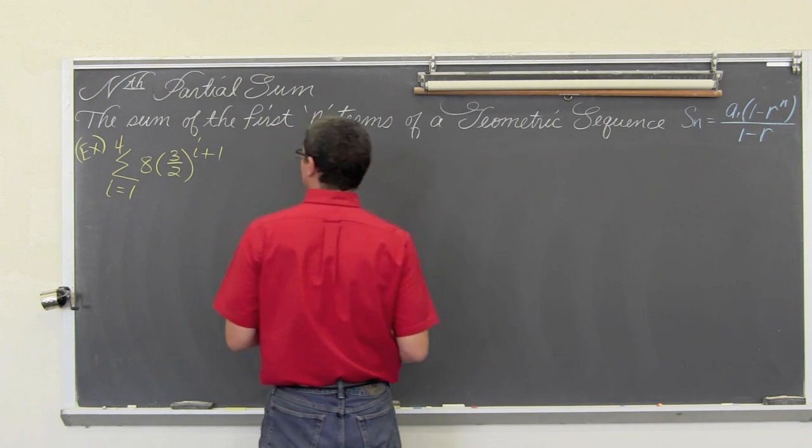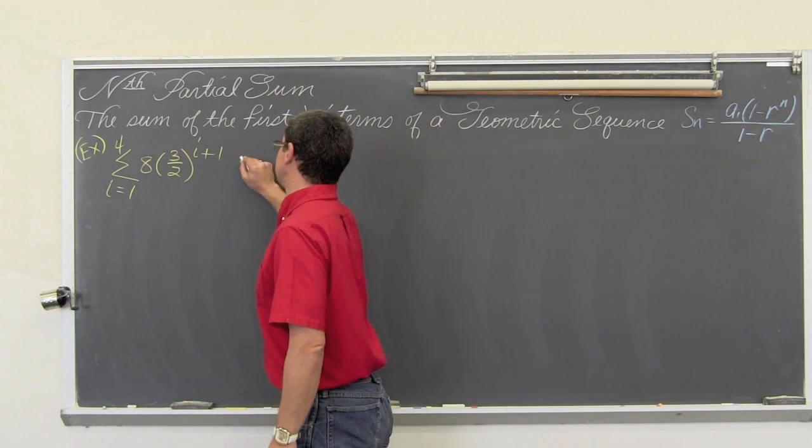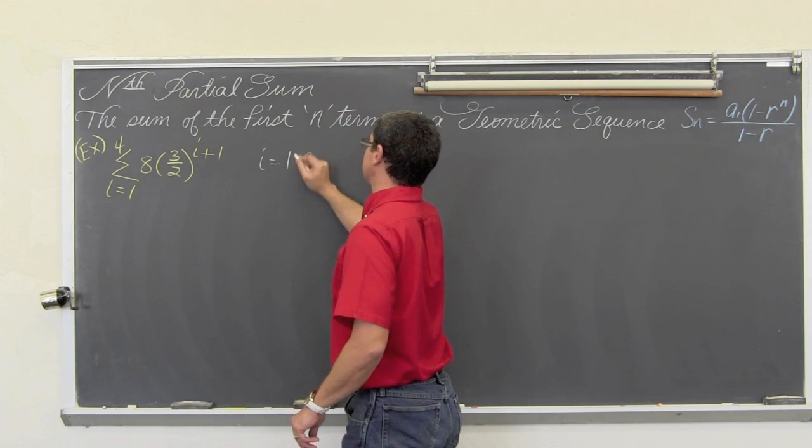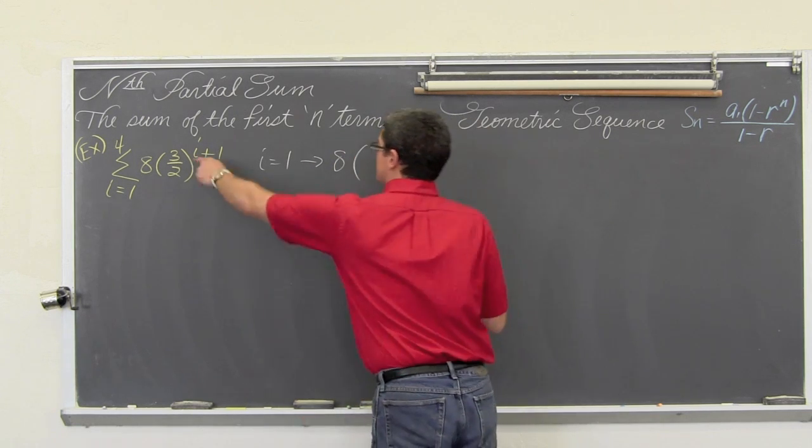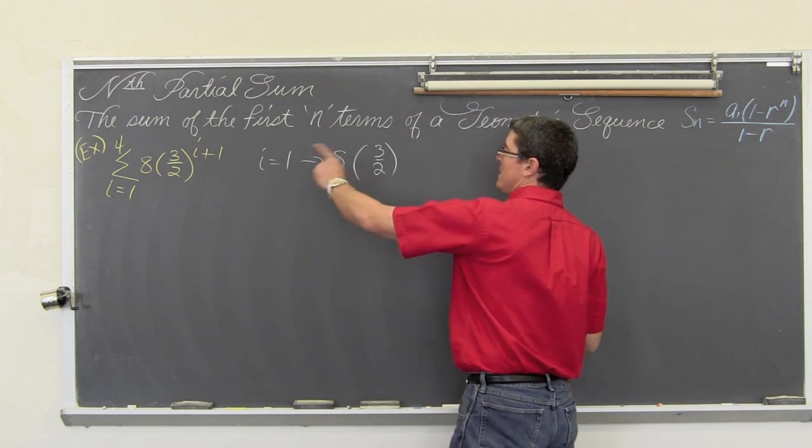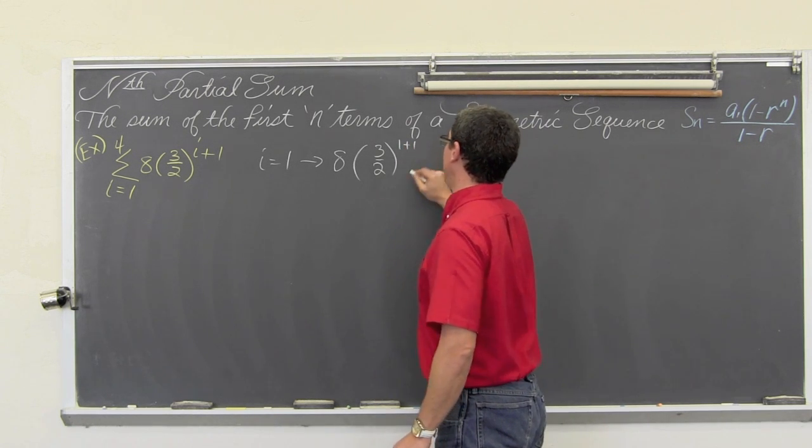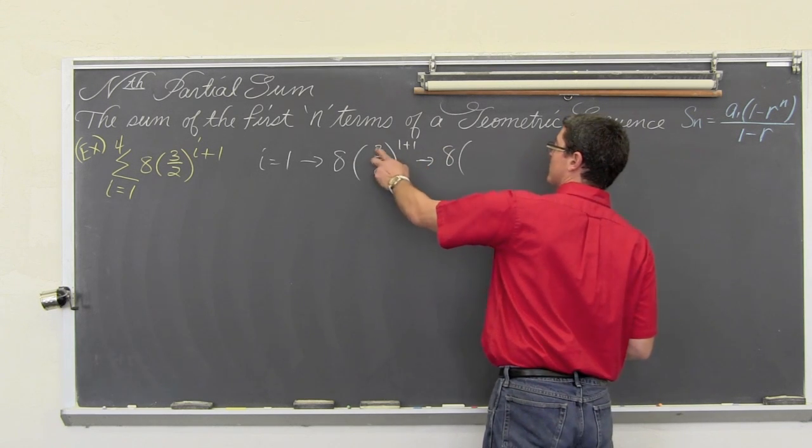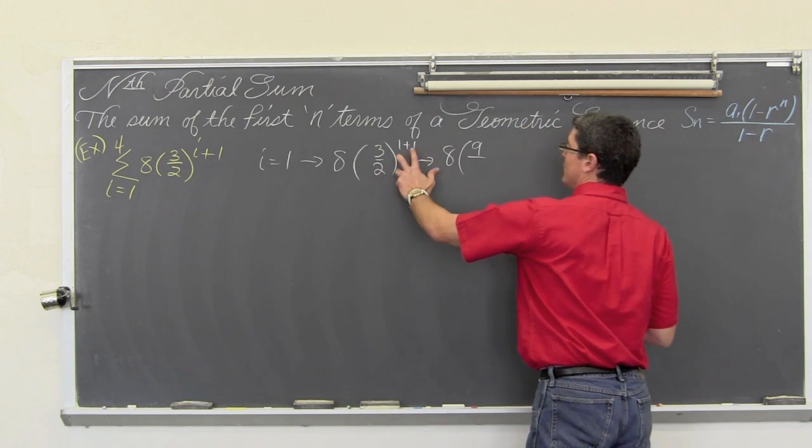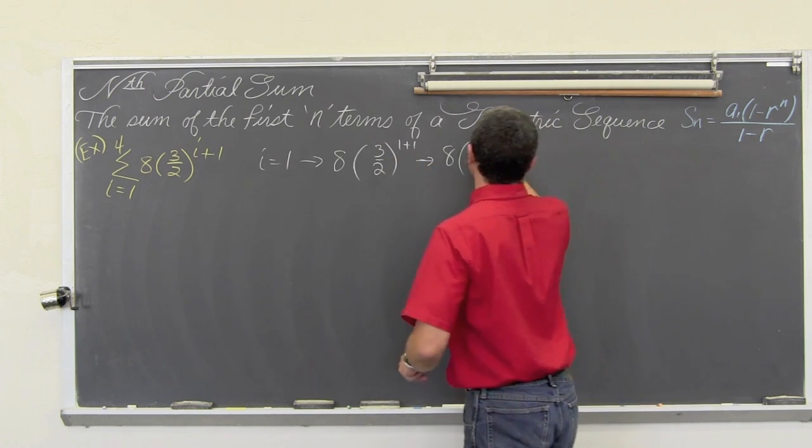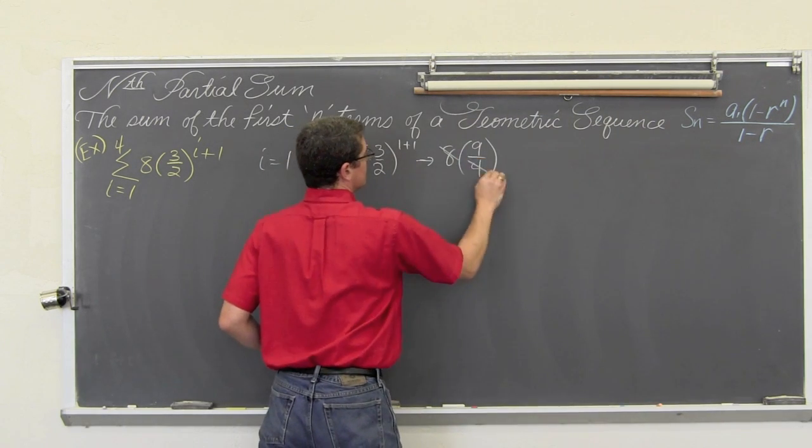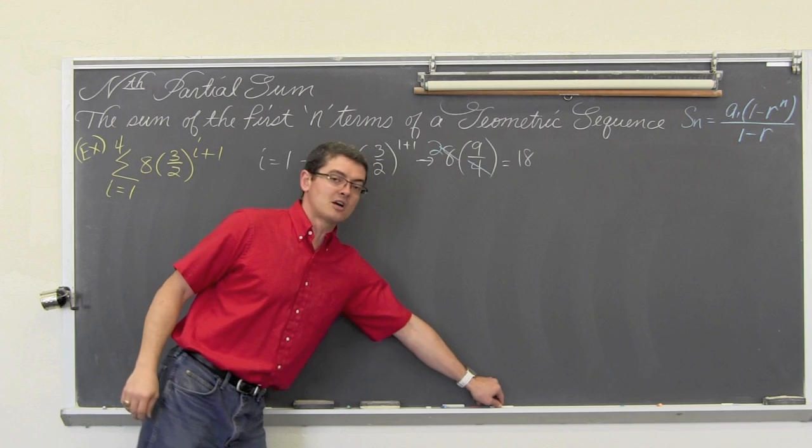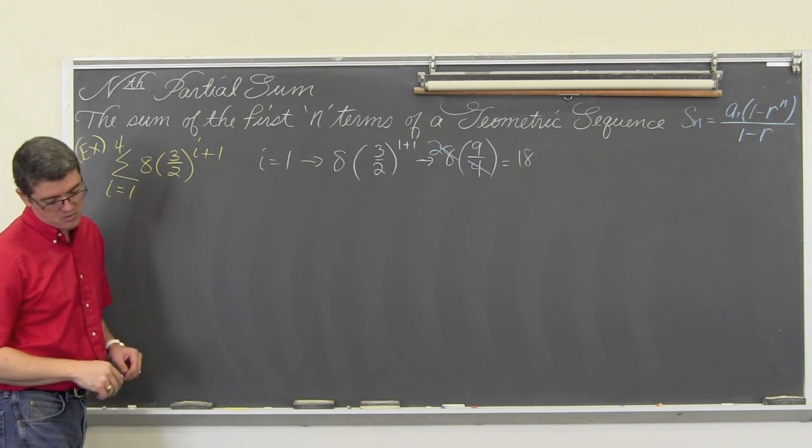So we need a sub 1. We are going to let i equal 1. For i equals 1, we are going to have 8 times 3 over 2 to the i plus 1, or 1 plus 1 power, that is going to be 8, so 3 squared is 9, over 2 squared, which is 4, and 8 divided by 4 is equal to 2. So 2 times 9 is equal to 18. So the first term of my geometric sequence is equal to 18.